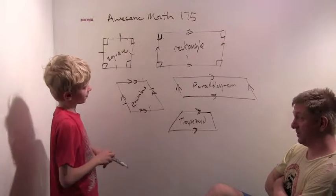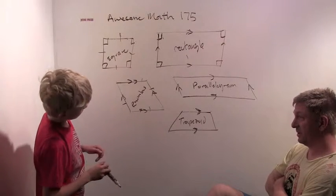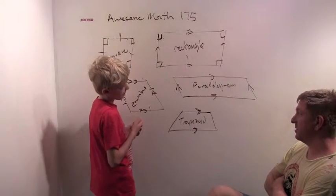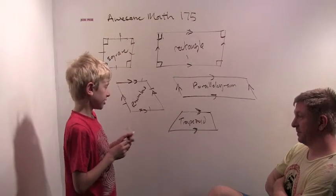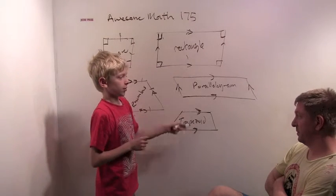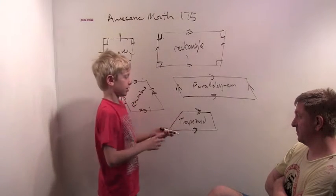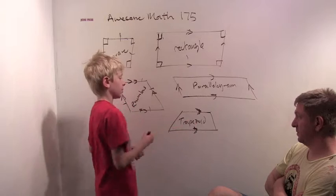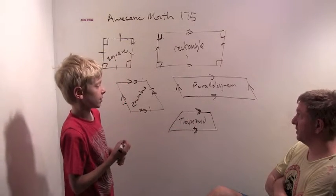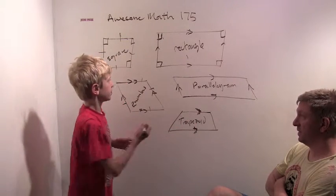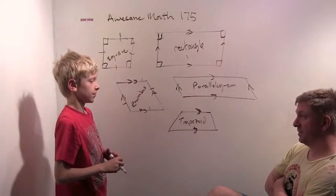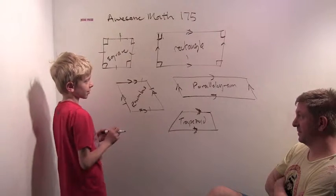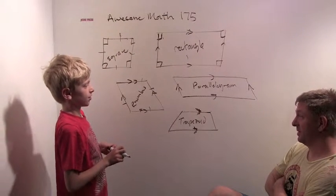Why is a rectangle always a trapezoid? What do you need to be a trapezoid? You need your bases to be parallel. Does a rectangle have that? Yes. That's it — that's all you need. That's a challenging one.